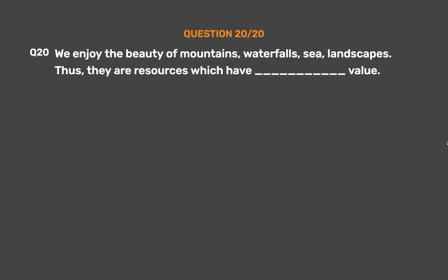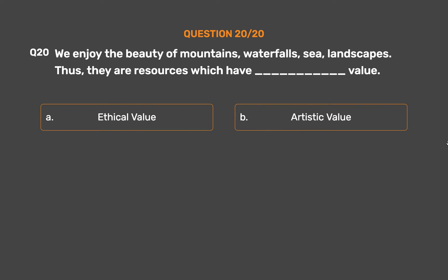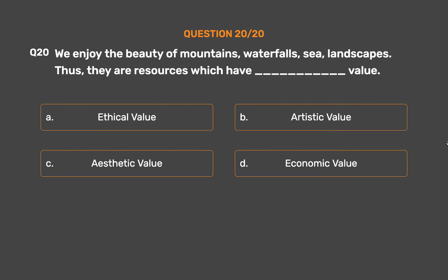Question number 20. We enjoy the beauty of mountains, waterfalls, sea, and landscapes. Thus, they are resources which have ___ value. Option A: Ethical value. Option B: Artistic value. Option C: Aesthetic value. Option D: Economic value.